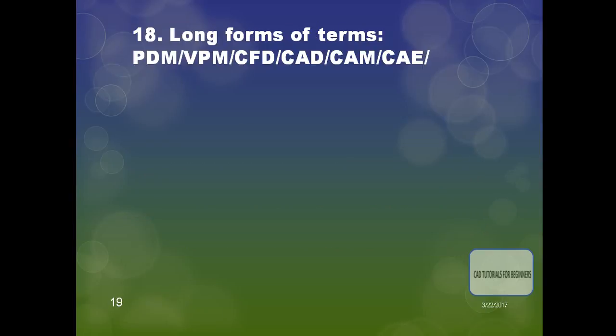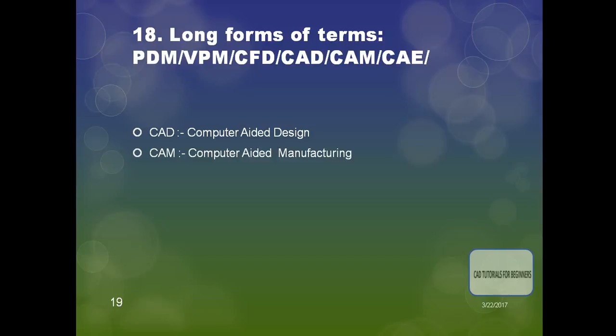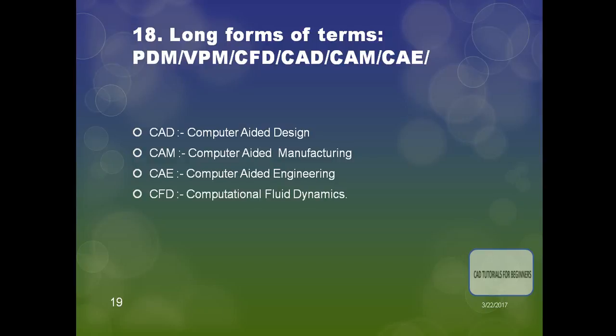The next question is: what are the long forms of PDM, VPM, CFD, CAD, CAM, and CAE? CAD is Computer-Aided Design, CAM is Computer-Aided Manufacturing, CAE is Computer-Aided Engineering, CFD is Computational Fluid Dynamics, PDM is Product Data Management, and VPM is Virtual Product Model.